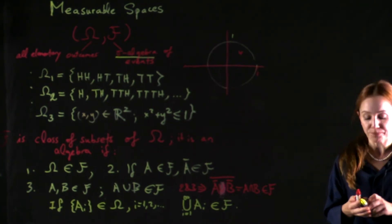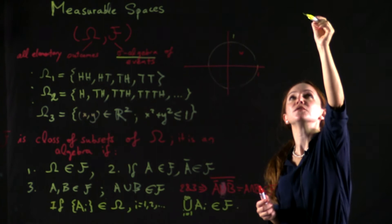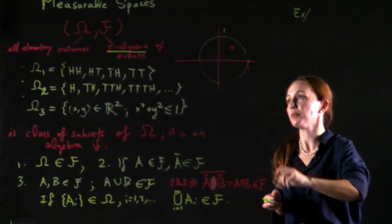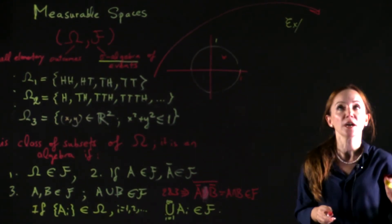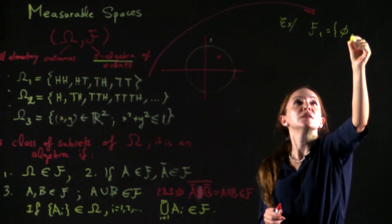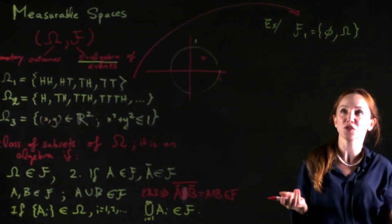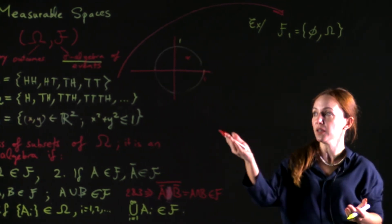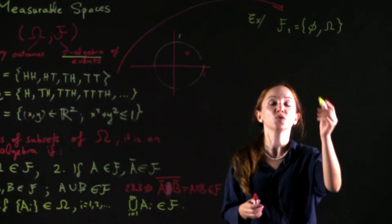Let's give some examples of sigma algebras, for example, for these three experiments. Let's begin with this one. We could have, for example, empty set and the sample space as an algebra. We don't even need to say sigma algebra because it's a finite sample space. So this would be valid.